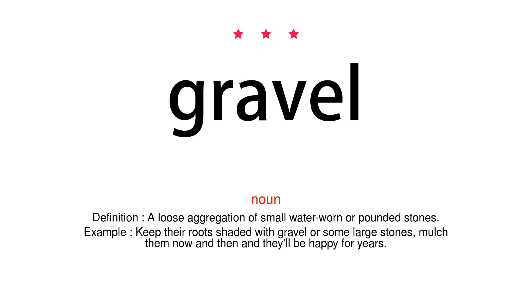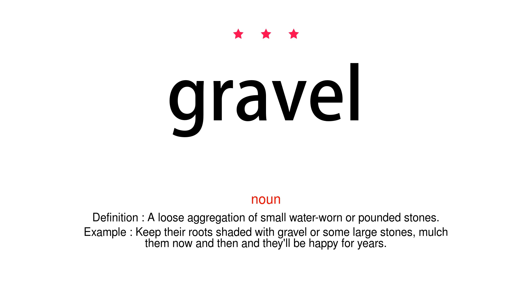Gravel. Noun. Definition: A loose aggregation of small water-worn or pounded stones. Example: Keep their roots shaded with gravel or some large stones, mulch them now and then and they'll be happy for years.